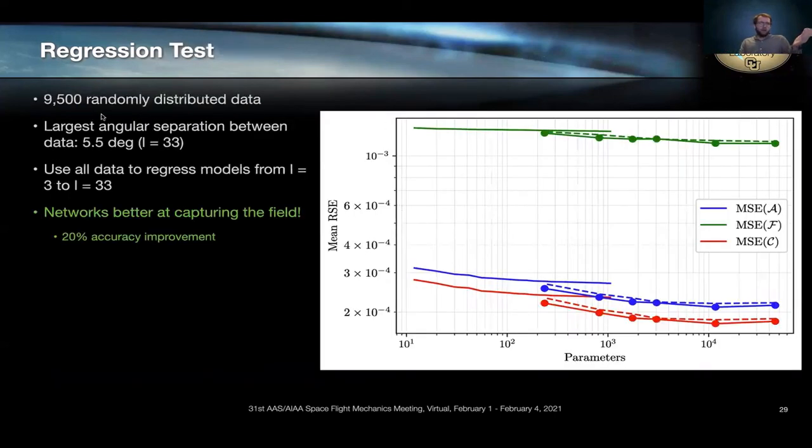So with that we fit a spherical harmonic model and a neural network model to 10,000 randomly generated data. And what you see is that the neural network models are about 20 percent more performant than the spherical harmonic models when trained on the same data, which suggests that the neural networks are going to be much more efficient at acquiring a gravity field from fresh data as opposed to a spherical harmonic fit.